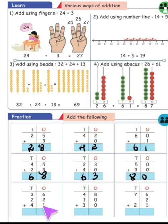36 plus 22 plus 41: 6 plus 2 plus 1 is 9, and 3 plus 2 plus 4 equals 9, so the answer is 99.